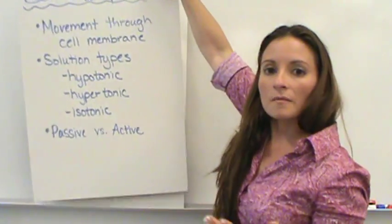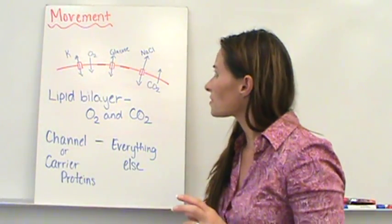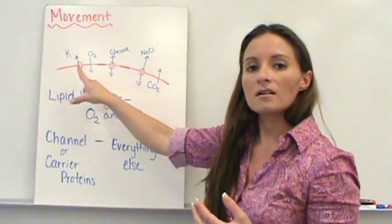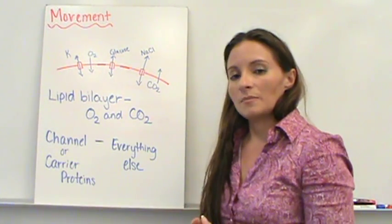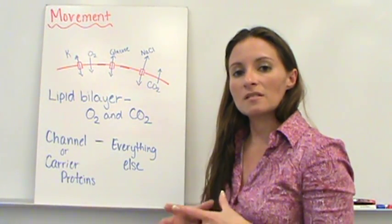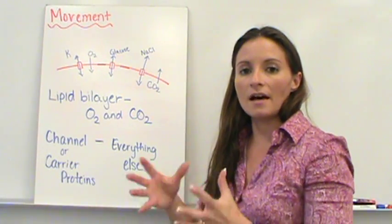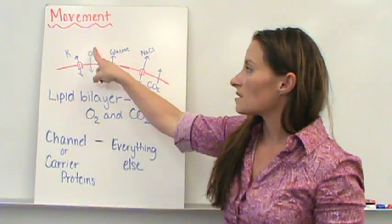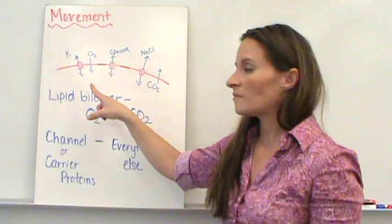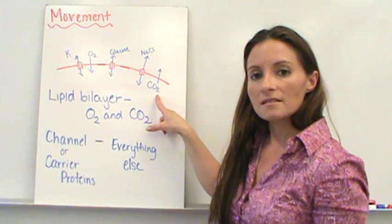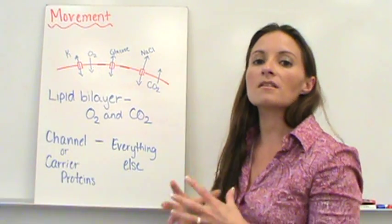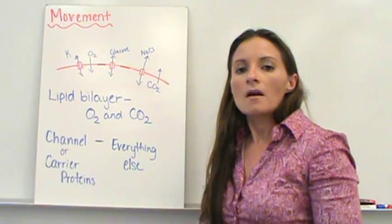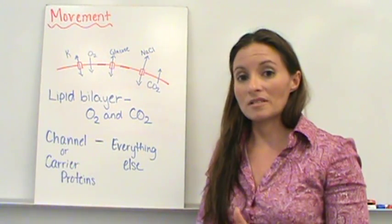Let's talk about actual movement through the cell. We've already discussed the cell membrane and transport proteins. The cell membrane is a lipid bilayer that keeps things in and out of the cell, and almost nothing can move straight through it — except for two substances: oxygen (O2) and carbon dioxide (CO2). These small gas molecules are able to pass directly through the lipid bilayer.